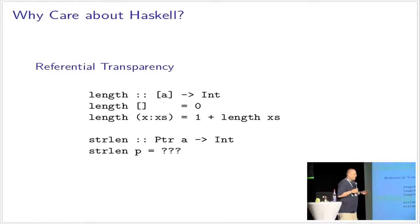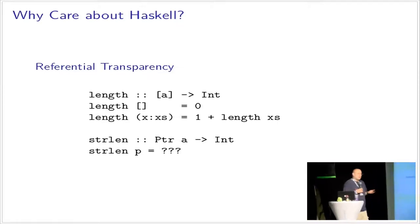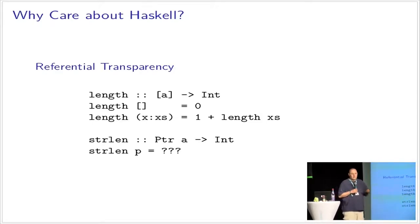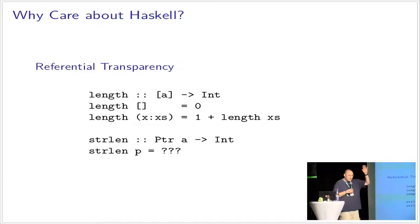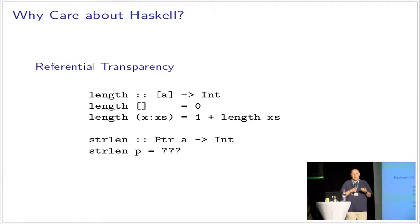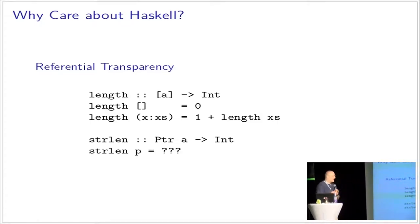Referential transparency is nice for the compiler because it allows great optimization opportunities. But where it's really beneficial is for software engineers: functions have no hidden state. If you have a function that takes five arguments, all it does is work with those five arguments. There is no global variable, no hidden state in a class method. It's just the arguments you pass that determine what the function does. So if you read Haskell code, you can read it one function at a time and always have a complete algorithm.